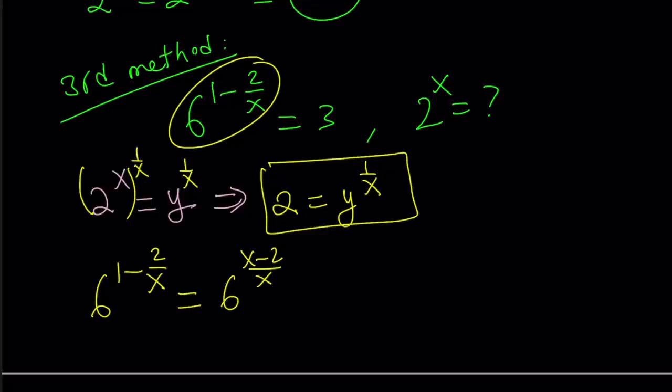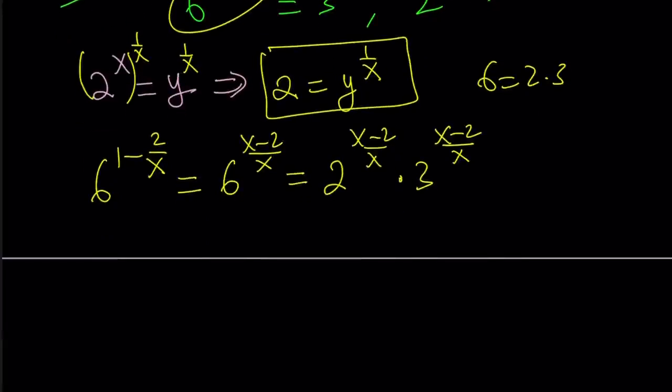And now we can break it down. Since 6 can be written as 2 times 3, we can write 6 to the power x minus 2 over x as 2 to the power x minus 2 over x times 3 to the power x minus 2 over x. So I use the property that allows you to write a to the n times b to the n equals a b to the power n. Or vice versa. Okay?